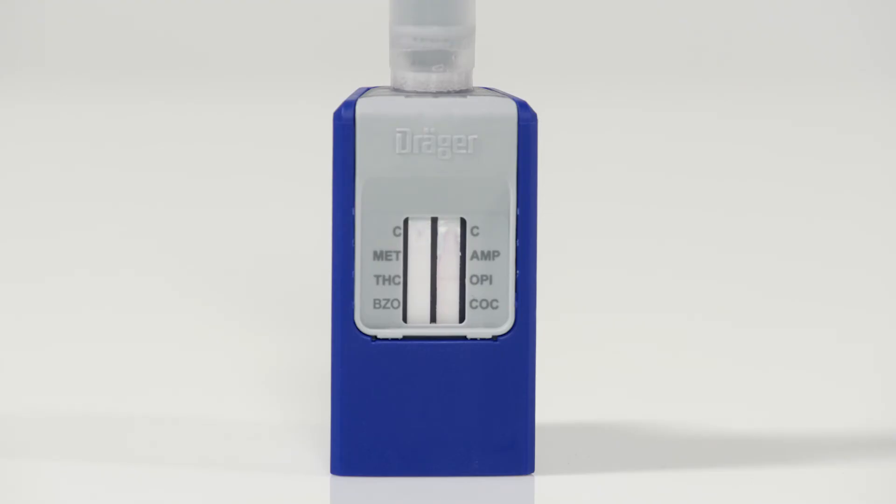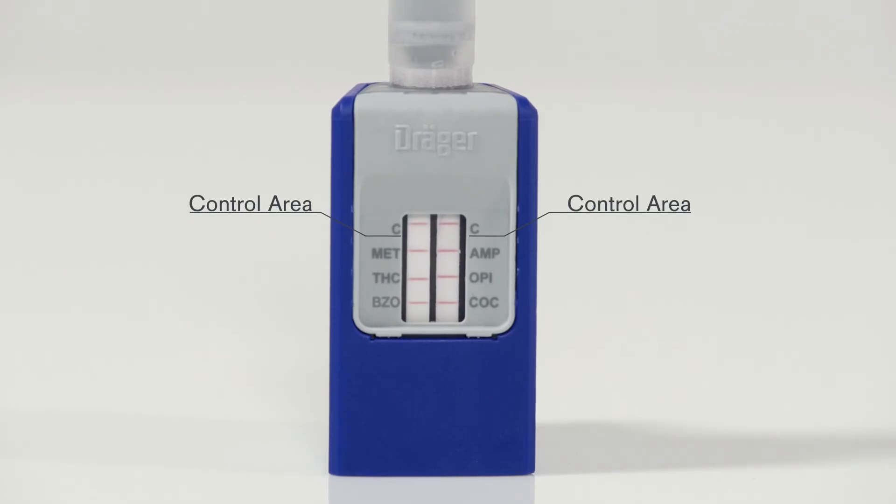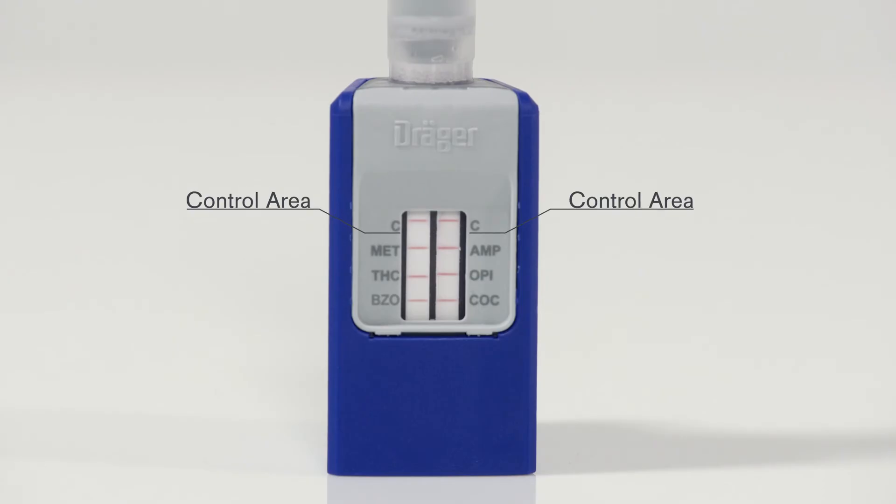If red lines appear in the viewing window, in the upper control area, labeled with C, and in the area below it showing the substances to be tested, then the test is valid and negative. This means none of the six substances have been identified.